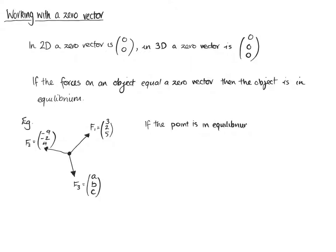Equilibrium can either mean that it's stationary or that it's moving at a constant speed, but you don't need to worry about that. You'll just see the word equilibrium. So we're looking at, if the point is in equilibrium, what are the values of A, B, and C?